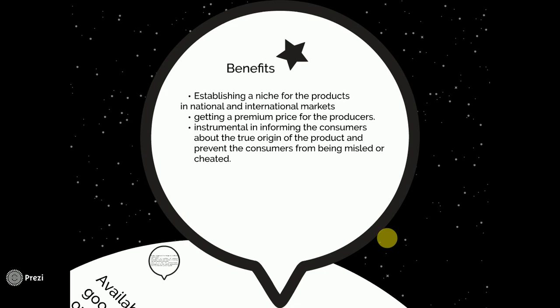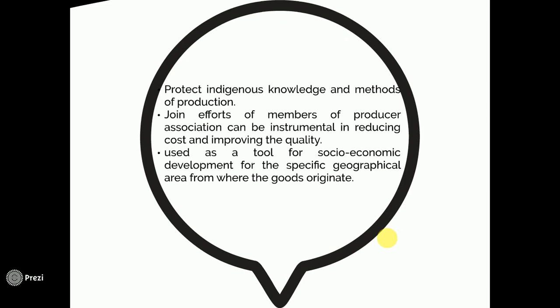GI helps in informing the consumers about the true origin of the product and prevents consumers from being misled or cheated, so consumers can easily find out with the help of a GI whether the product they are going to purchase is from the original place or not. It also helps in protecting indigenous knowledge and methods of production. For example, people who have been in a business since generations know certain secrets of their trade developed by their ancestors, and if those people or that particular group can get GIs, that knowledge will be safeguarded.